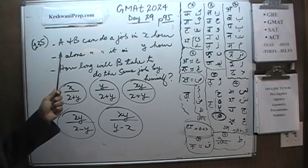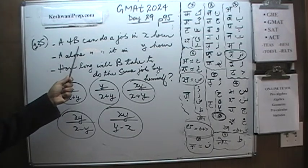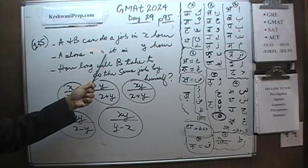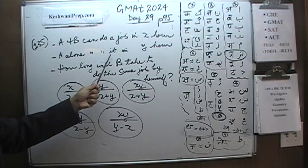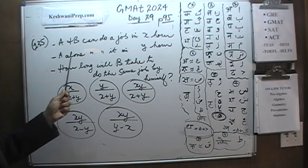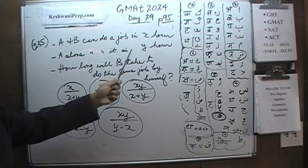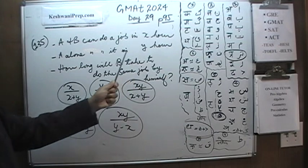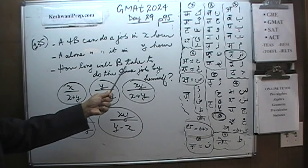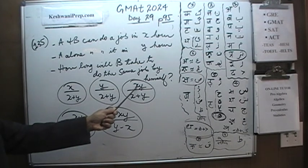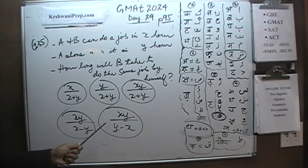We are told that we have two people, A and B. A and B can do a job in X hours. We are also told that A alone can do the same job in Y hours. So A and B together take X hours, and A alone takes Y hours. The question is how long will B take to do the same job by himself? The answer choices are: X over X plus Y, Y over X plus Y, XY over X plus Y, and XY over X minus Y.